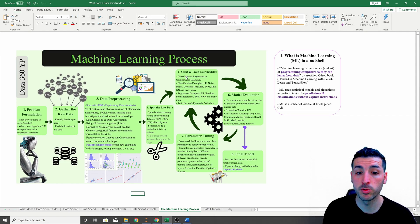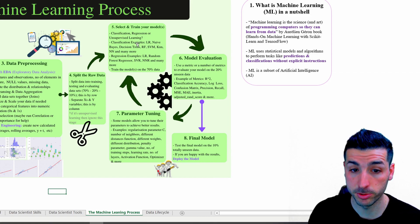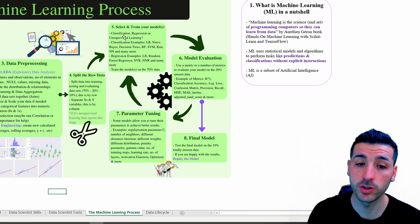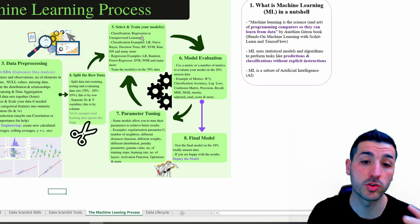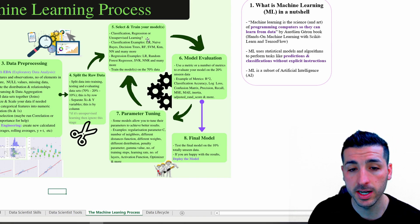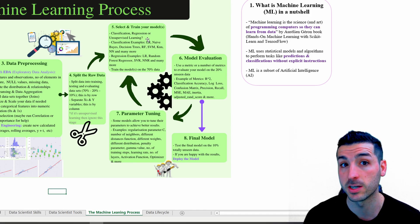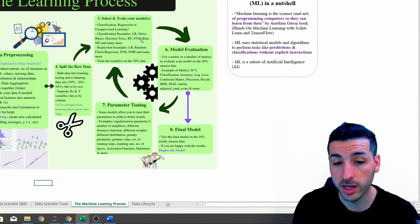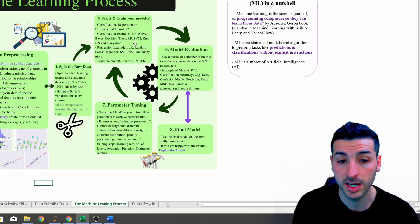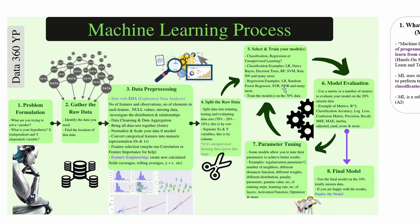After step four, you move into selecting and training your model. You have three main options: classification, regression, and unsupervised learning. Classification is where you predict a class — good loan or bad loan, spam or not spam. Regression is where you predict a continuous number. Unsupervised learning is where you're not predicting anything but investigating similar characteristics within groups, such as customer segmentation. Classification examples include logistic regression, Naive Bayes, decision trees, random forest, and support vector machines. Regression examples include linear regression, random forest regressor, support vector regressor, and neural network regression.